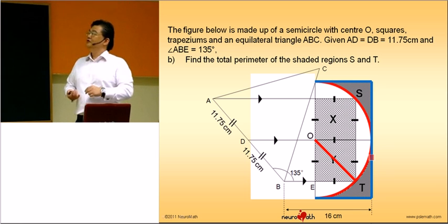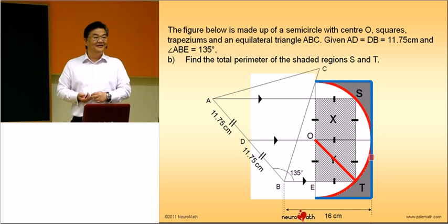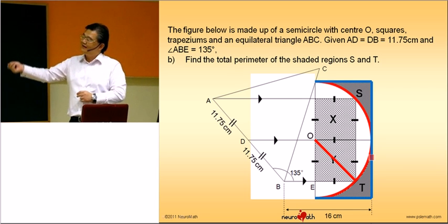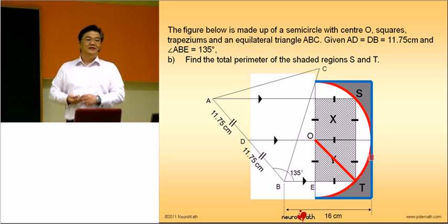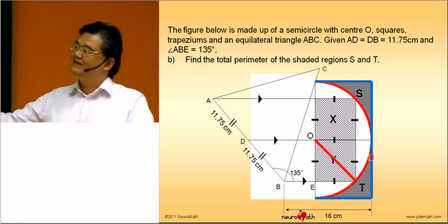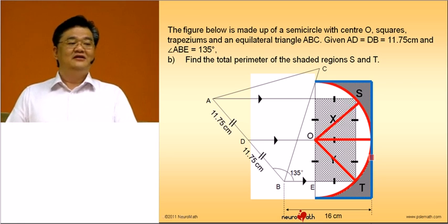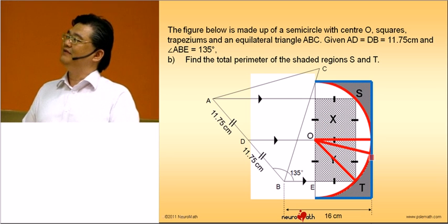And earlier on, you drew a diagonal like this. And you know the length of this diagonal, the one that dissects the square in two parts. Now, can you tell me what is this line also? Radius! The square is the radius of the semicircle.